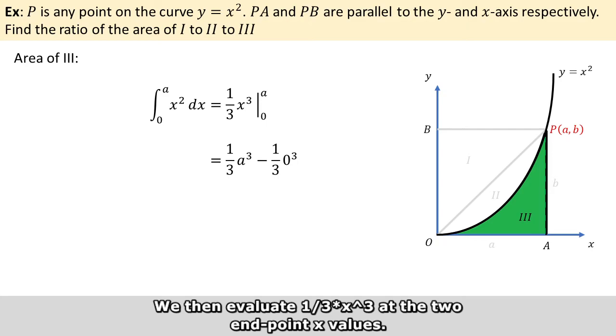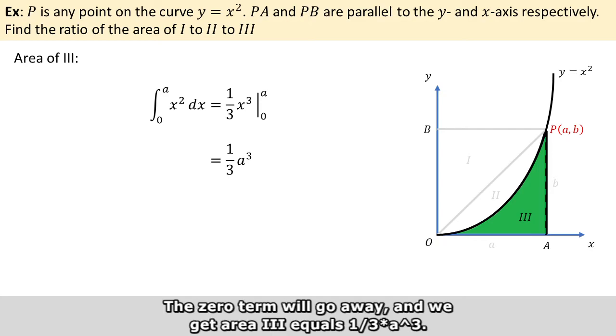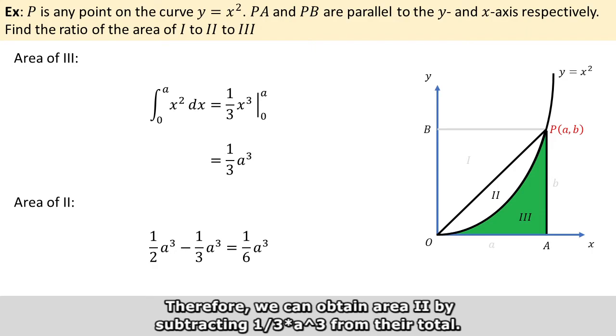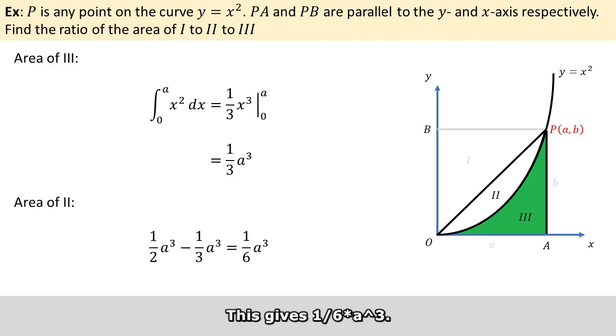We then evaluate (1/3)x³ at the two endpoint x-values. The zero term goes away and we get area 3 = (1/3)a³. Therefore, we can obtain area 2 by subtracting (1/3)a³ from their total, which gives (1/6)a³.